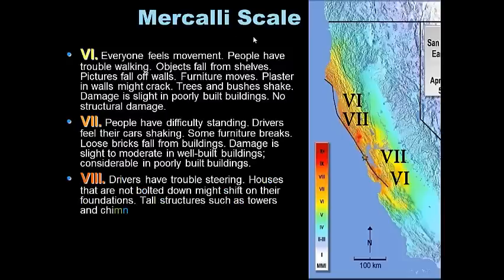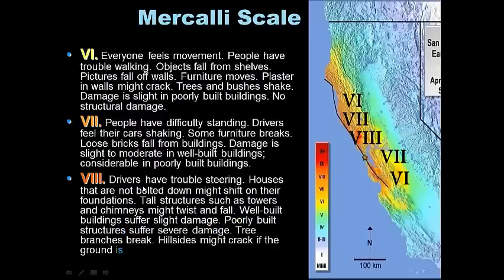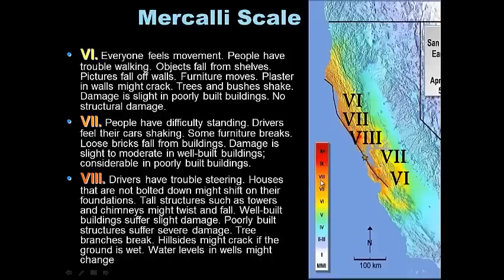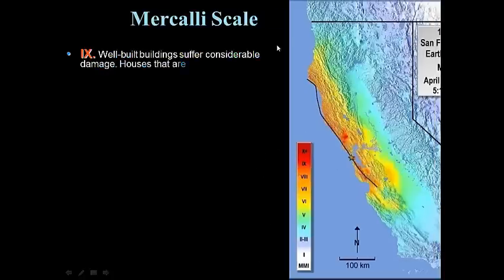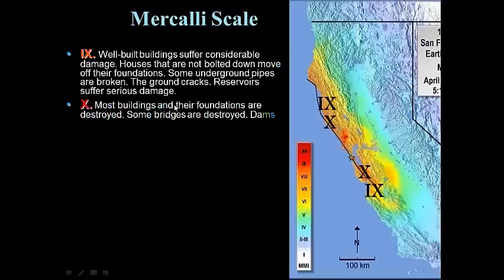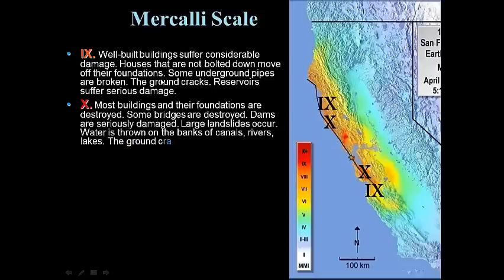Mercalli VII: people have difficulty standing, drivers feel cars shaking, some furniture breaks loose, brick falls from buildings — slight to moderate damage in well-built buildings, considerable damage in poorly-built ones. VIII: drivers have trouble steering, unbolted houses might shift on foundations, tall structures like towers and chimneys might twist and fall, well-built buildings suffer slight damage, tree branches break, hillslides crack, water levels in wells might change. IX–X: well-built buildings suffer considerable damage, houses move off foundations, underground pipes break, most buildings in foundations are destroyed.